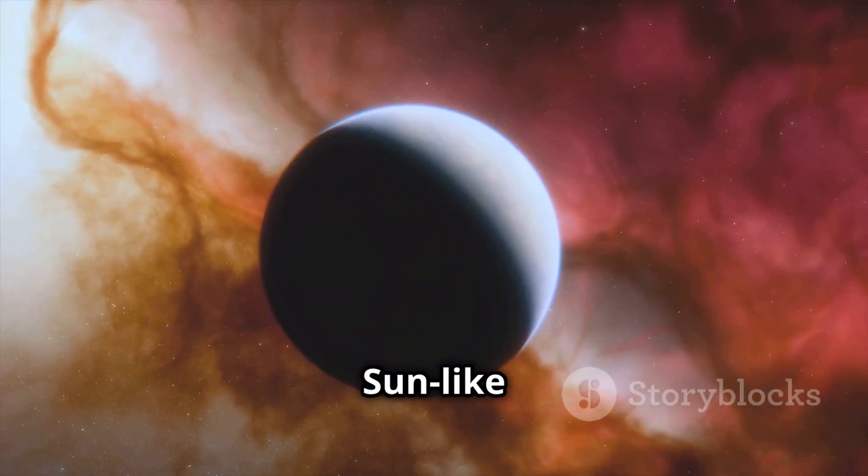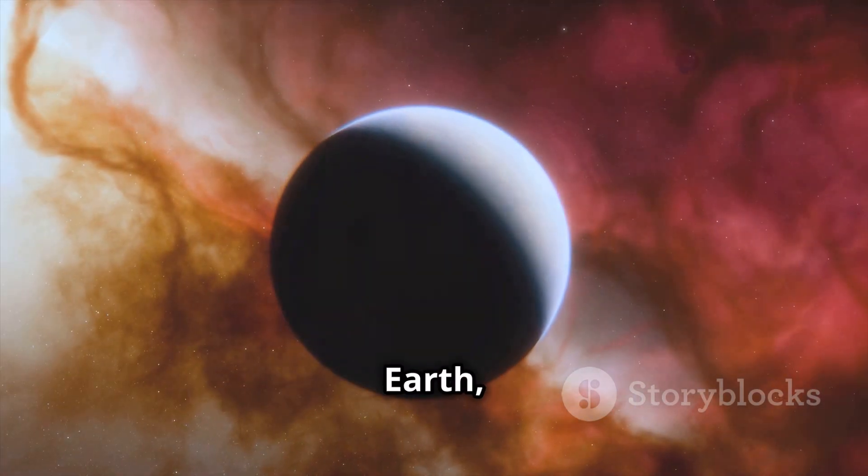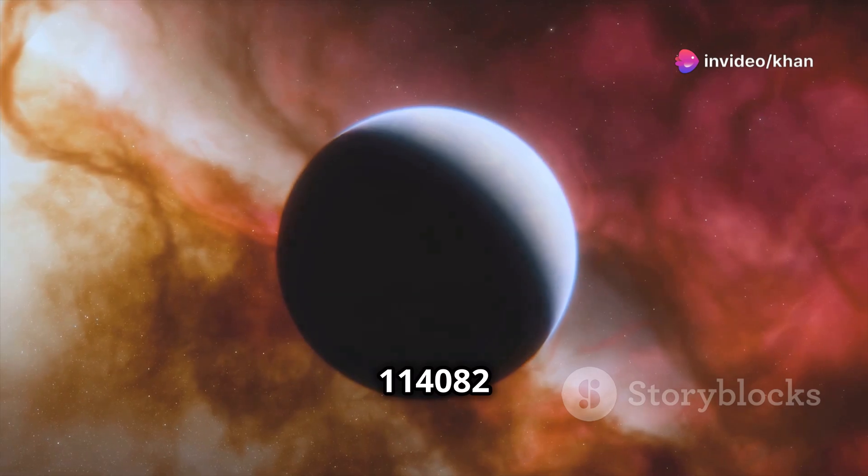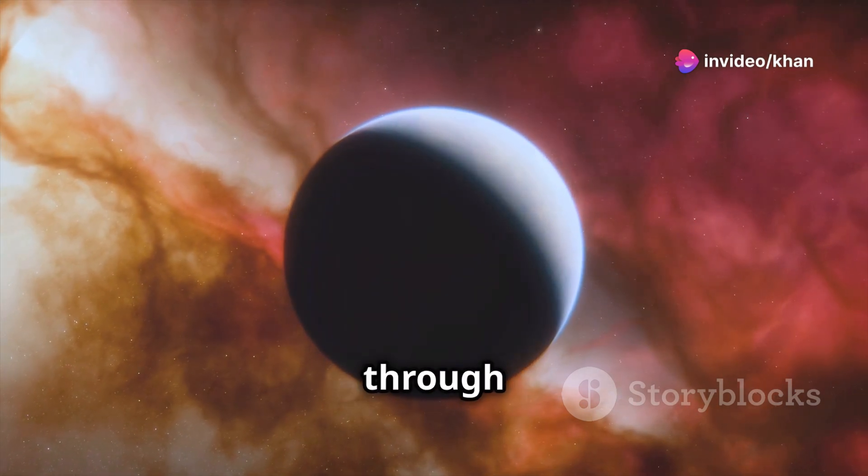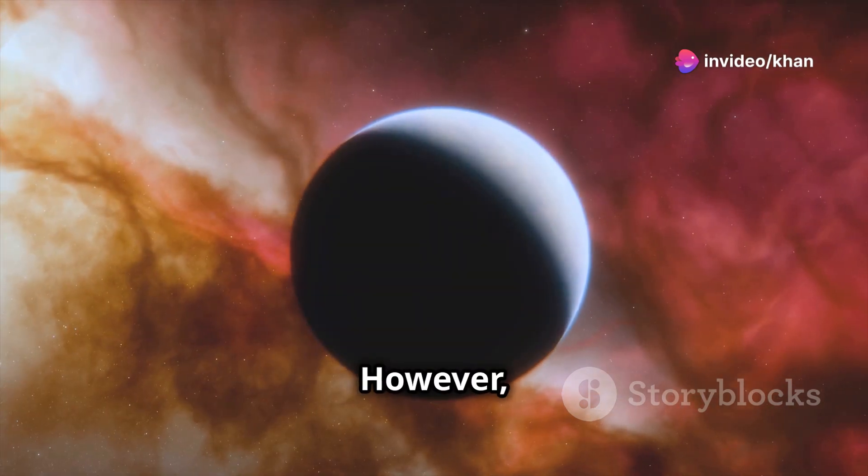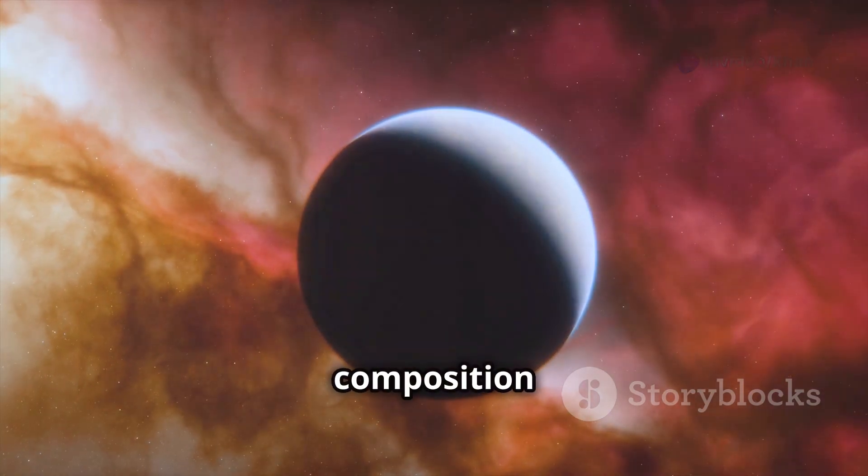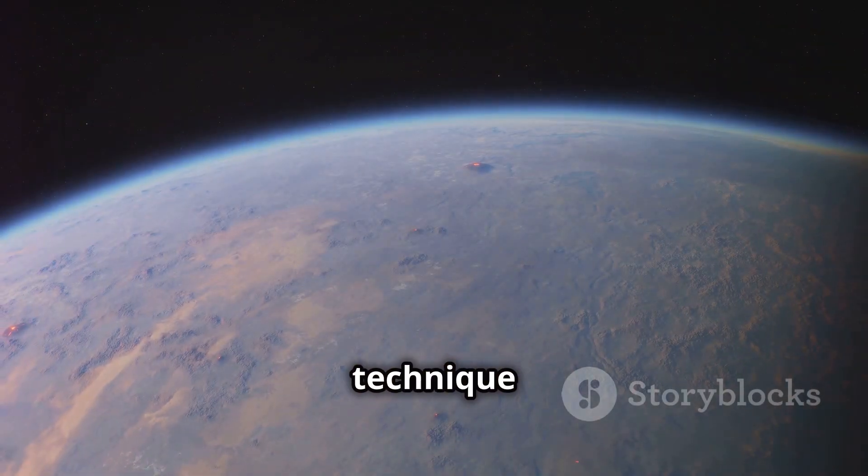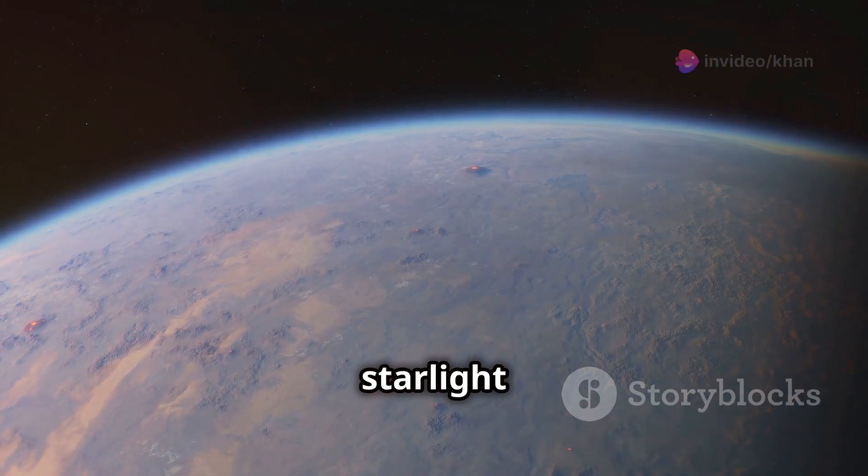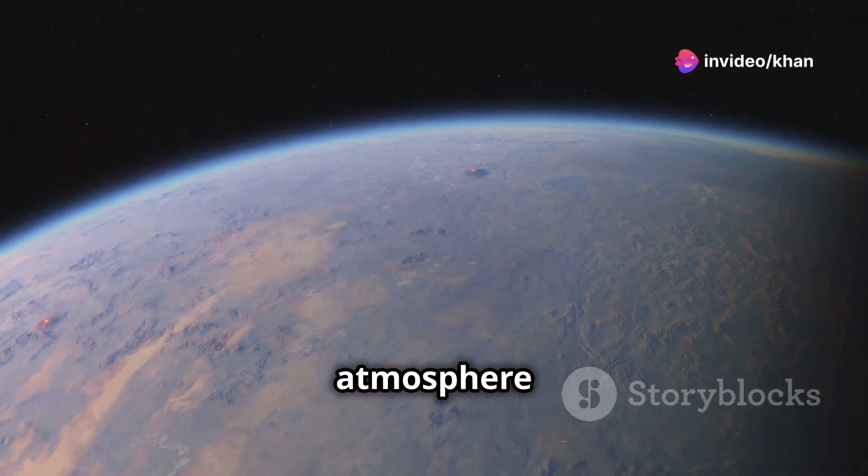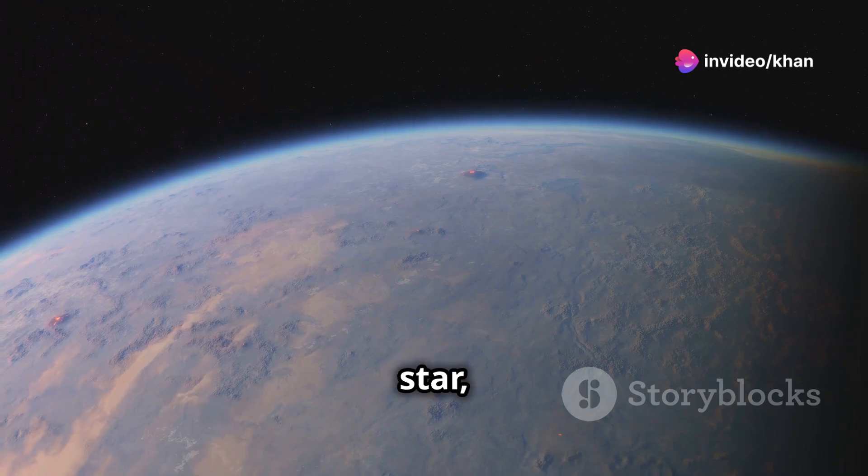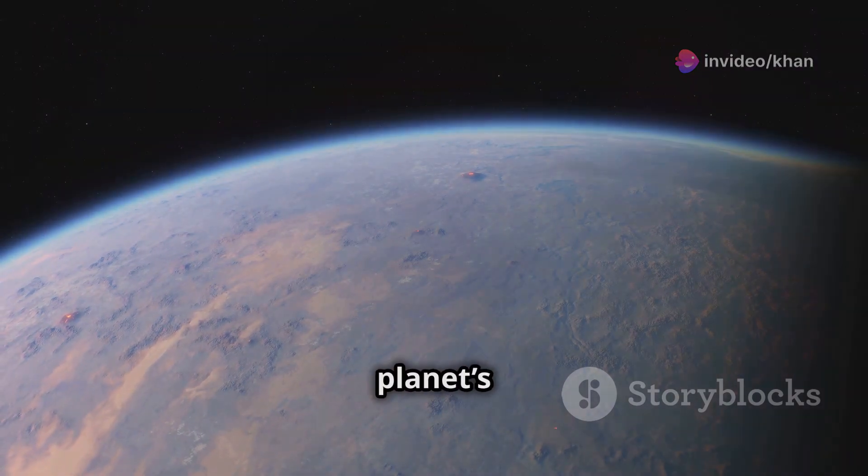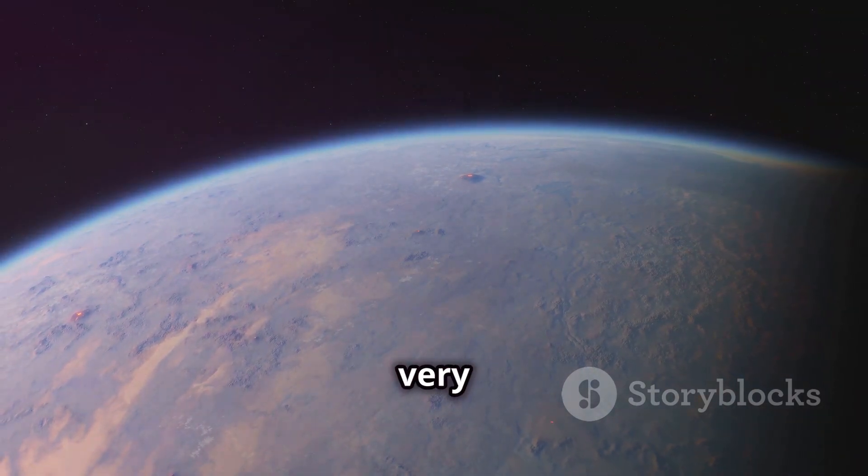Orbiting a young sun-like star located 310 light-years from Earth, HD 114082 b was initially discovered through indirect methods. However, until now its atmospheric composition remained a mystery waiting to be unveiled. Using the powerful technique of transmission spectroscopy, Webb captured the starlight filtering through the planet's atmosphere as it transited its host star, allowing scientists to decode the planet's atmospheric secrets for the very first time.